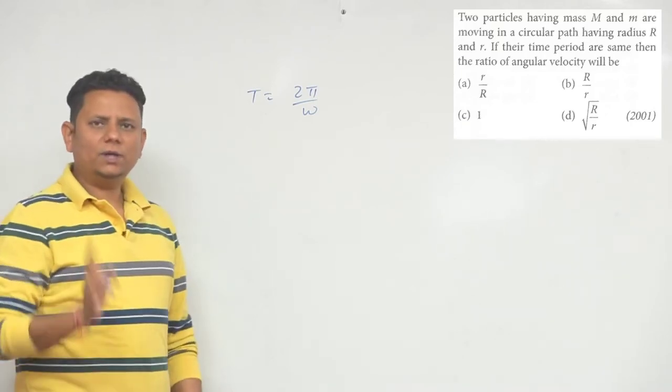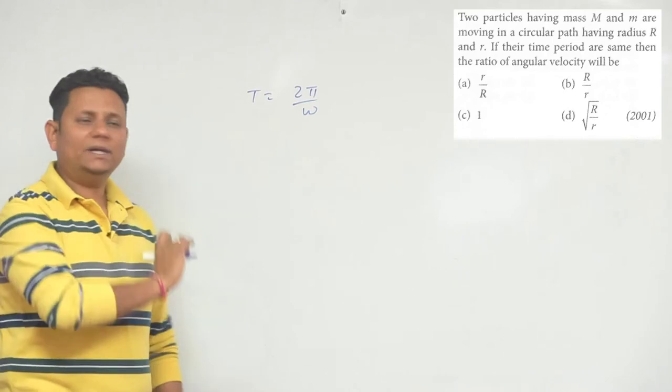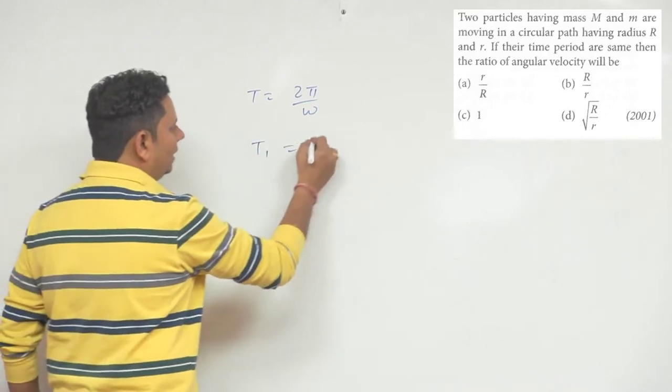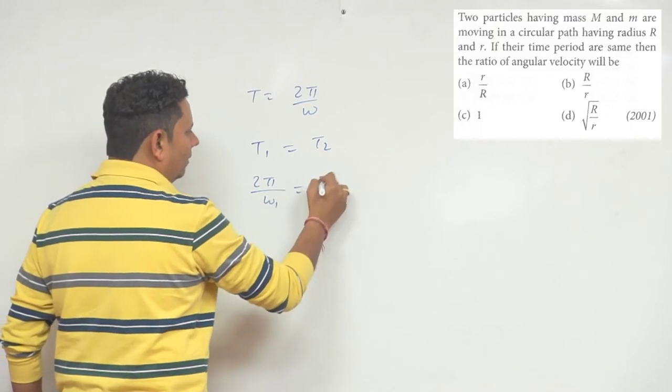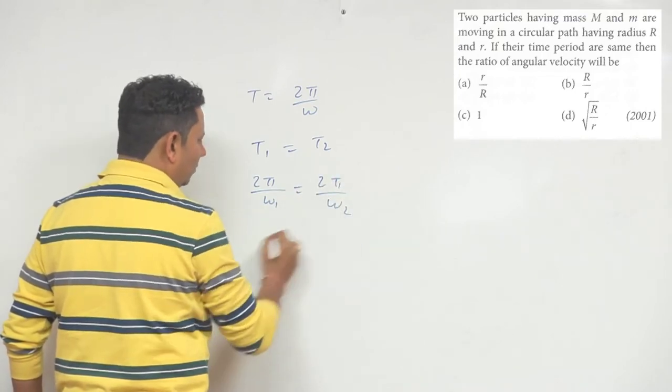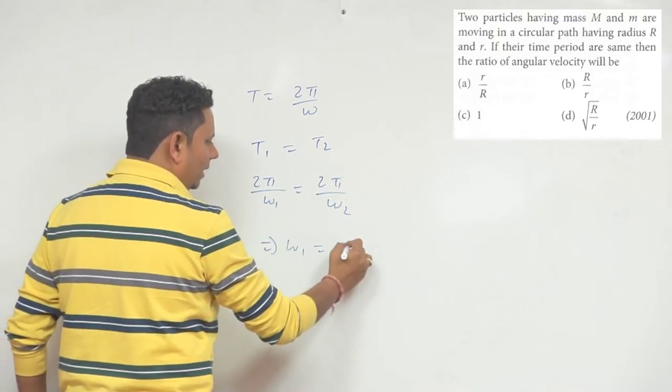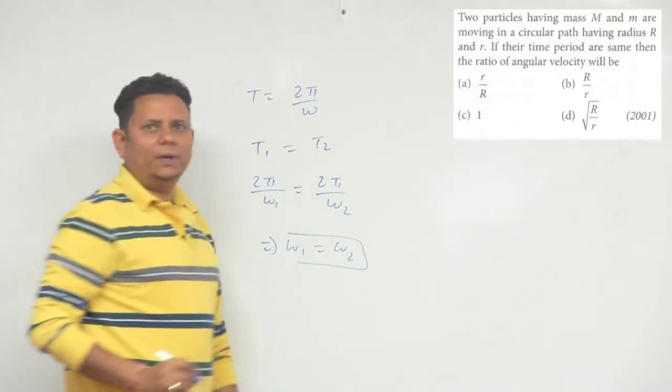For two uniform circular motions whose time periods are the same, we can say T1 equals T2. This is given, so we can write 2π/ω₁ equals 2π/ω₂. This means omega 1 will be equal to omega 2.